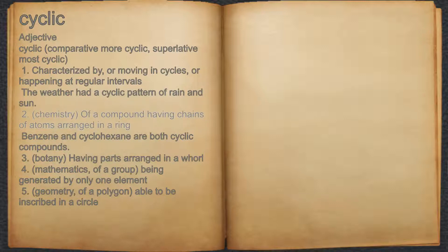2. Chemistry: of a compound having chains of atoms arranged in a ring. For example, benzene and cyclohexane are both cyclic compounds.